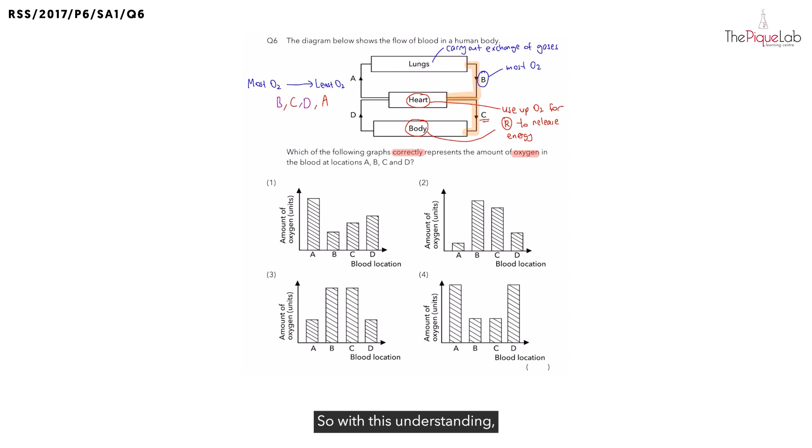So with this understanding, we can take a look at the graphs and choose which graph correctly represents the amount of oxygen. So let's take a look at option one. We know B is supposed to have the most amount of oxygen. Now let's check. Does option one show us the most amount of oxygen? No. So we can cross out option one. We know it should be the most. So option one is out.